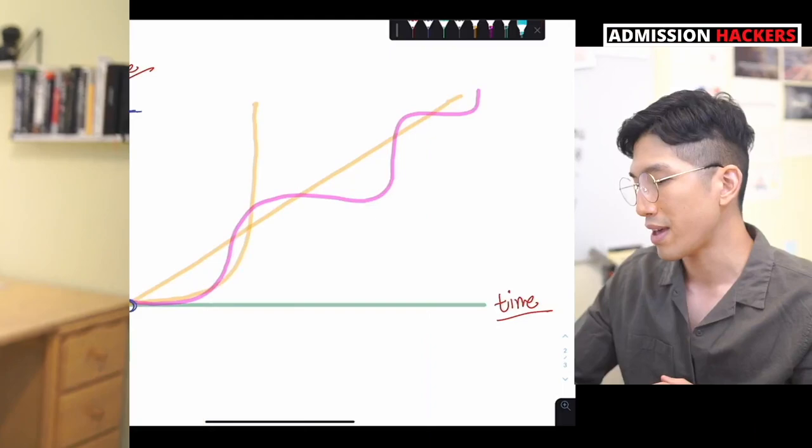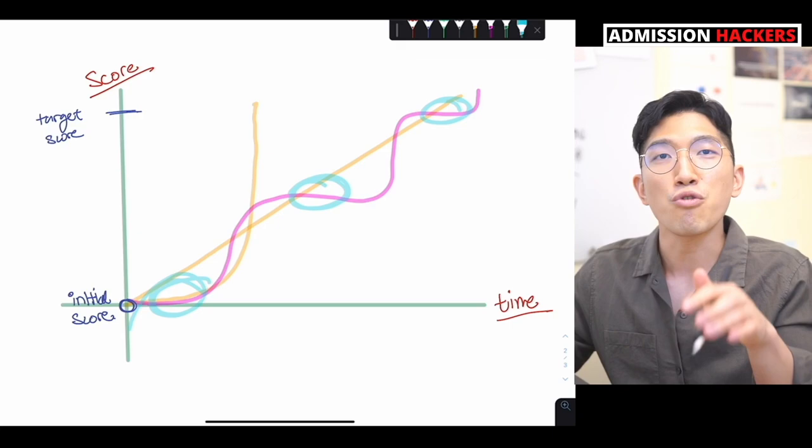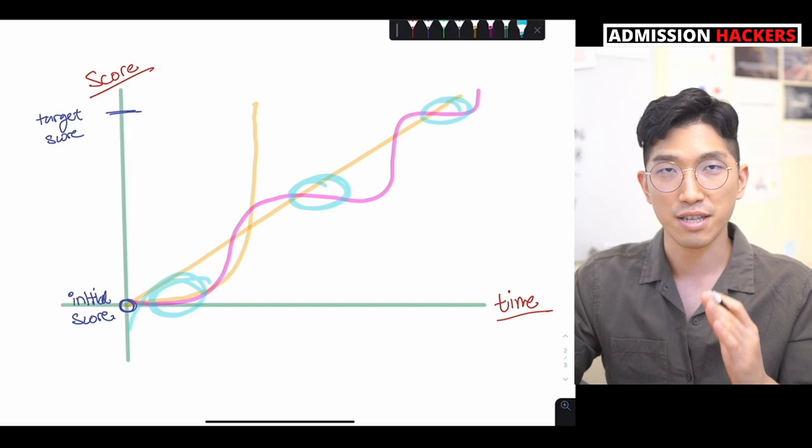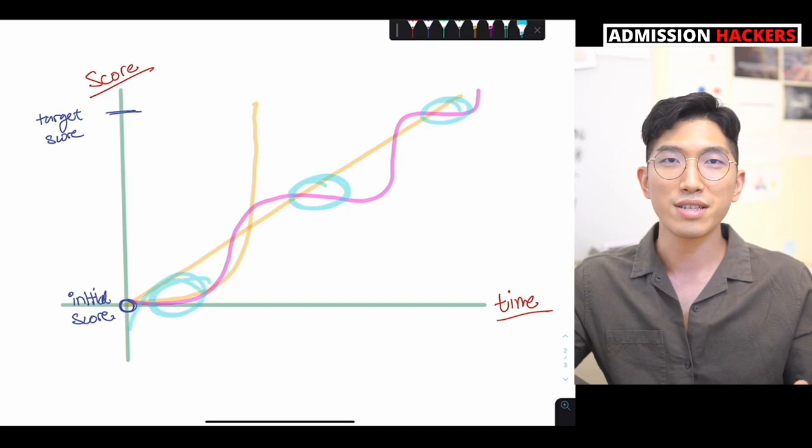So when it comes to having a correct expectation, the most important thing is to note that you're going to have these flat periods when you're trying to study and trying to raise your SAT score. You might be studying for a couple of days, you might be studying for a couple of weeks, but there is a very good chance that you are not going to see any improvement in those time periods. And that's because your brain actually needs some time to make the new incoming information into a second nature. So let me give you a more relatable example.